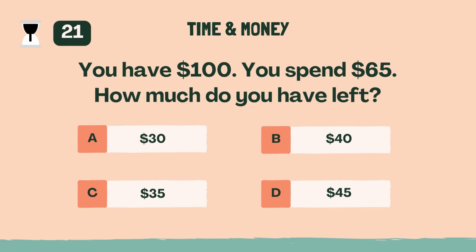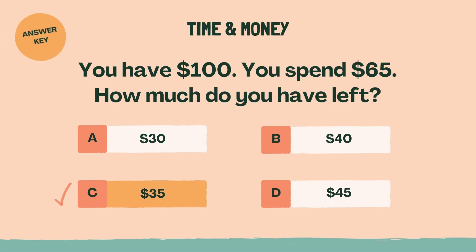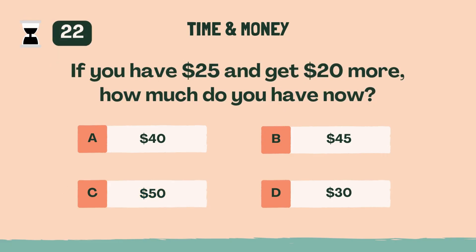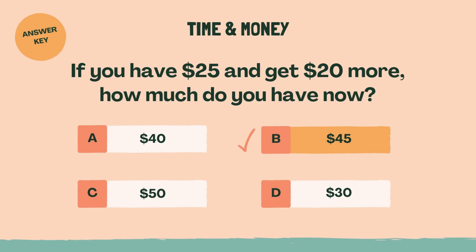You have $100. You spend $65. How much do you have left? C, 35. If you have $25 and get $20 more, how much do you have now? B, $45.